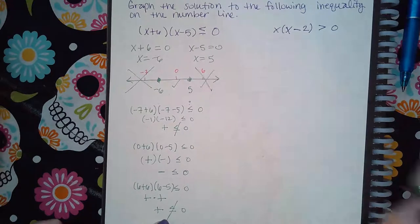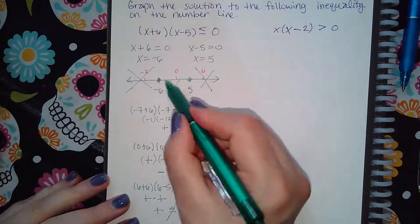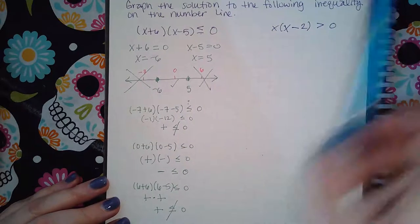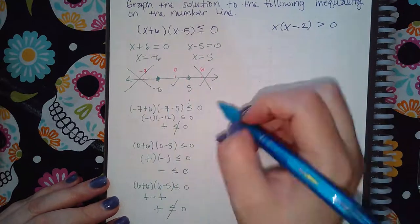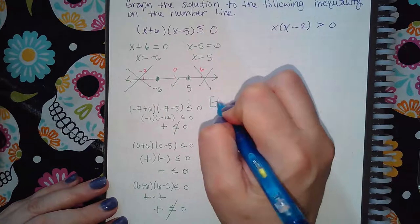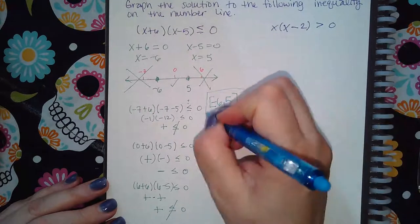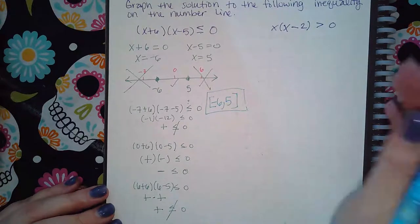So this side does not check out either, which means this segment in here is the only part of my solution. And what is the interval in this segment? It's a bracket for the solid dot negative six up to five, and then a bracket for the five. And so your final answer is this interval right there.